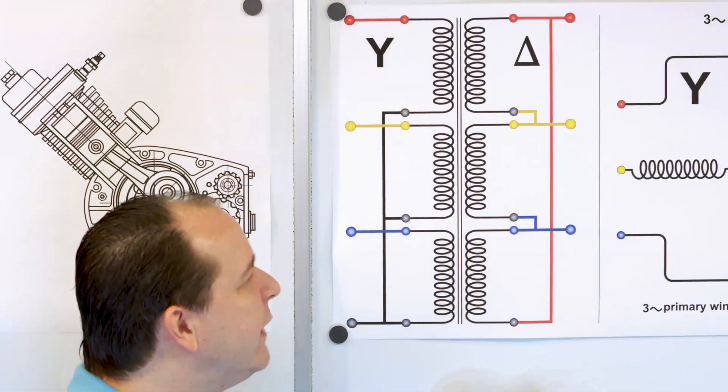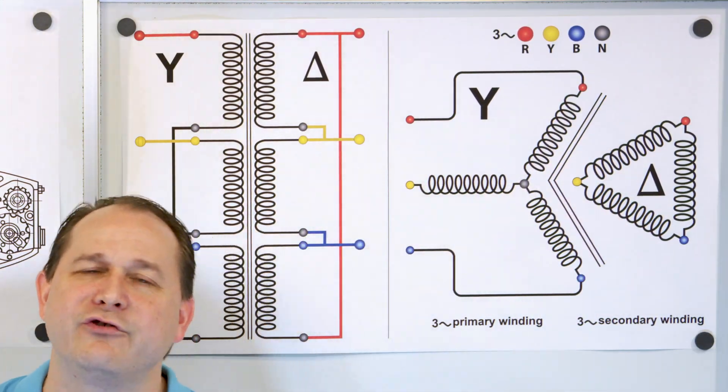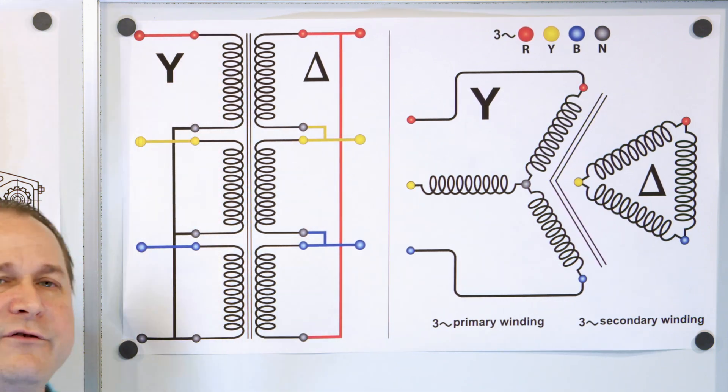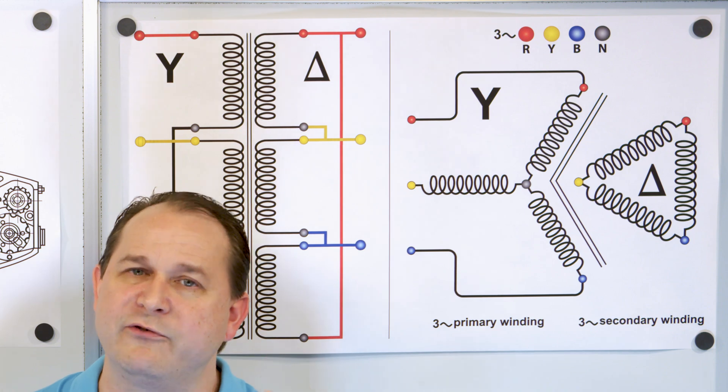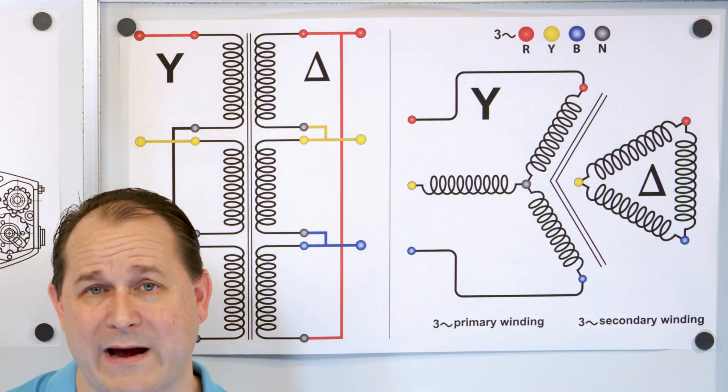The main winding was of the normal Lotus O delta type connected in panendermic semiboloid slots of the stator, with every seventh conductor being connected to a non-reversible trimmy pipe to a differential girdle spring on the up end of the gram meter.